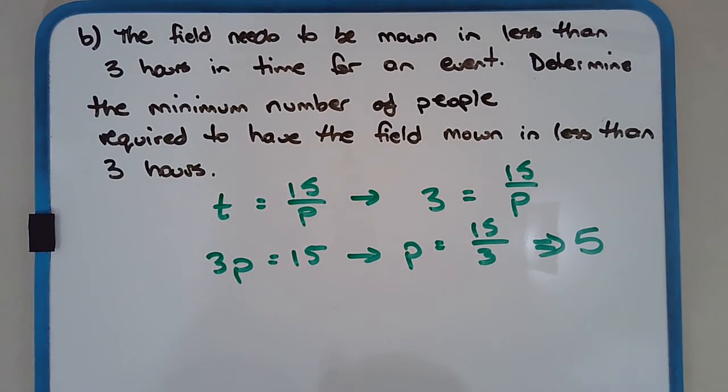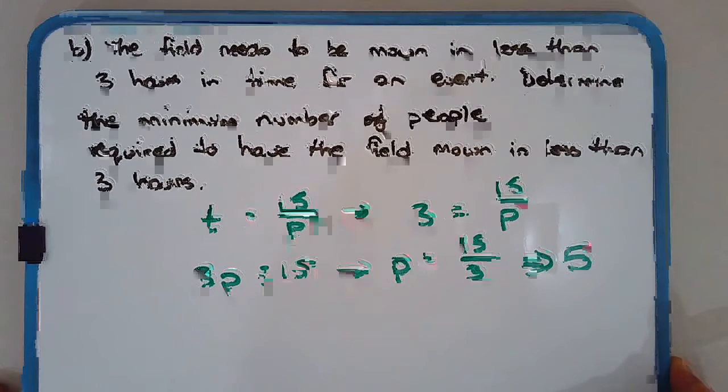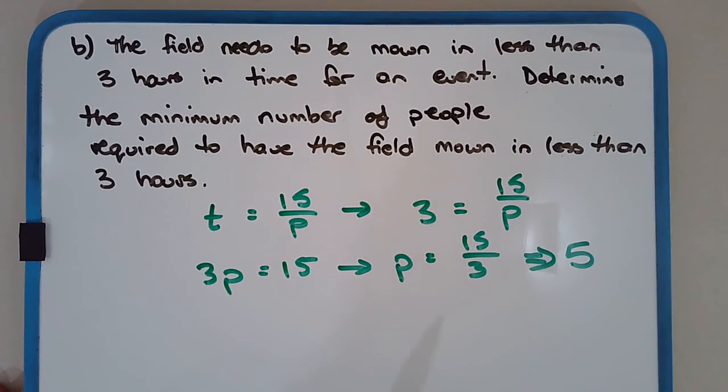So now, is that the correct answer? Because five people will mow this field in exactly three hours. That answer is, in fact, incorrect. Well, I haven't finished the question yet. I haven't finished the solution. It says less than three hours. Five people will mow it in exactly three hours. Now, three hours is not less than three. Three is equal to three.